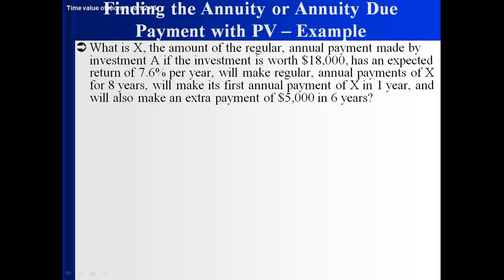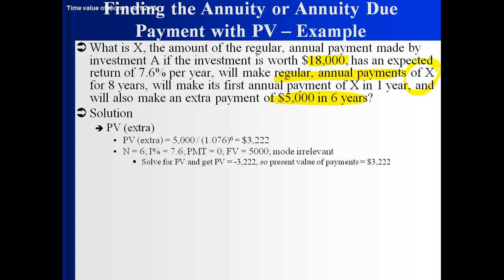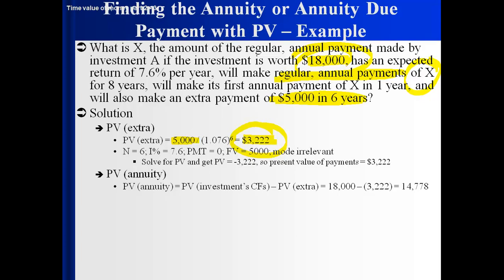So let's find the present value of $5,000 in six years and subtract that from $18,000. We find that $5,000 in six years is equivalent to $3,222 today. So if the present value of all the cash flows is $18,000 and the present value of the $5,000 in six years is $3,222, then those eight regular payments have a present value of $14,778.